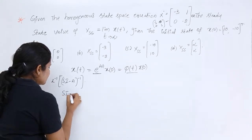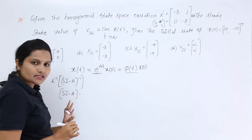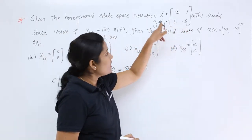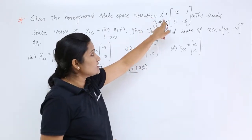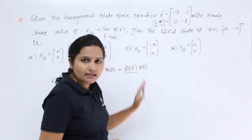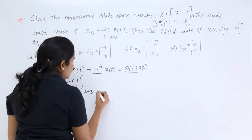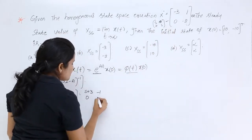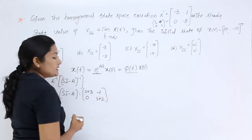First we need to find out sI - A, and after that we find (sI - A) inverse. Here I am finding the sI - A value. The identity matrix must have the same order as A. Since A is 2×2, the identity matrix is also 2×2, giving sI as [s, 0; 0, s]. Computing sI - A gives [s+3, 1; 0, s+2].